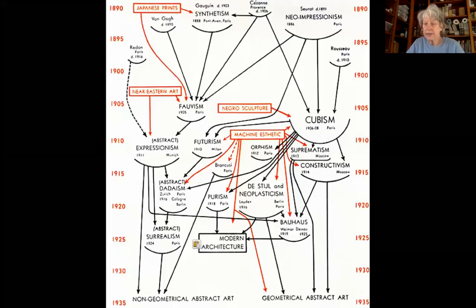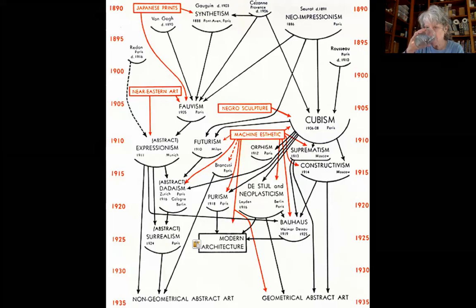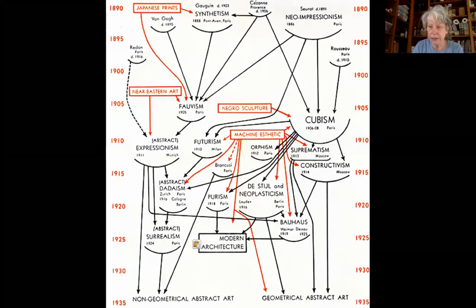Last time I started the lecture with this chart, which was created by the curator of the Museum of Modern Art in New York in the 1930s as a kind of genealogy of abstraction. He was trying to represent how modern art — mainly abstraction — evolved from the late 19th century. In Barr's way of thinking, the post-impressionists Gauguin, Van Gogh, Cézanne, and Seurat gave rise to two schools of early abstraction: Fauvism, which we talked about last time, and Cubism, which we're going to talk about today.